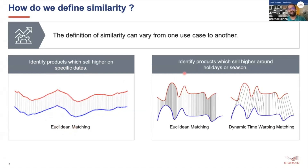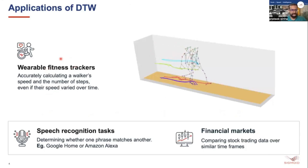But in another scenario where we have to identify products which sell higher around holidays or a specific season, the peaks and troughs are not aligned on the time points. In such a case we need to move one time series with respect to the other and calculate the distance between those peaks and valleys when they are aligned — we need to shift one with respect to the other.